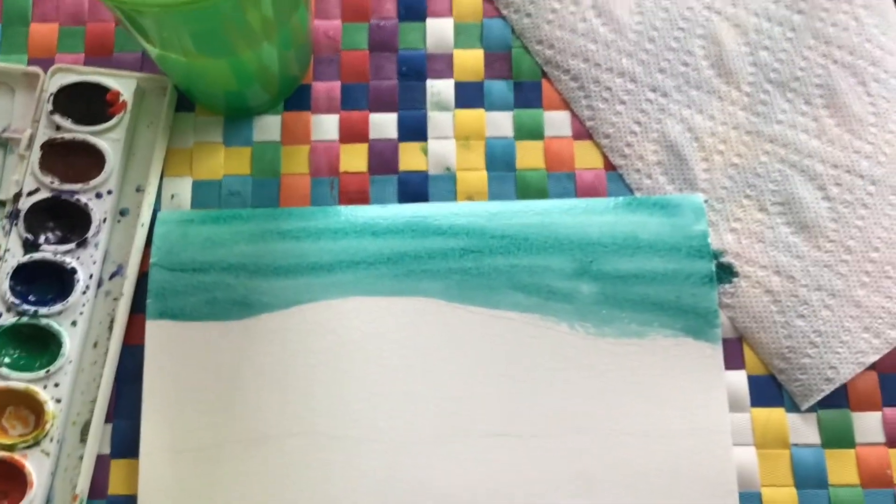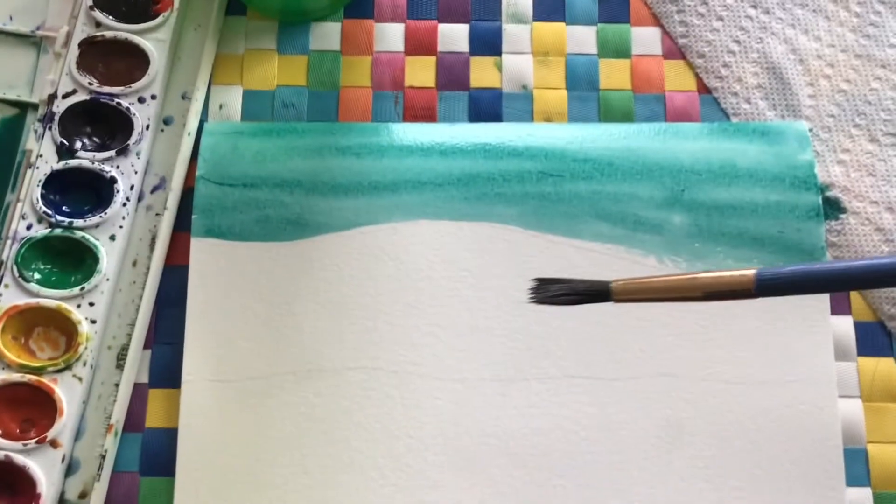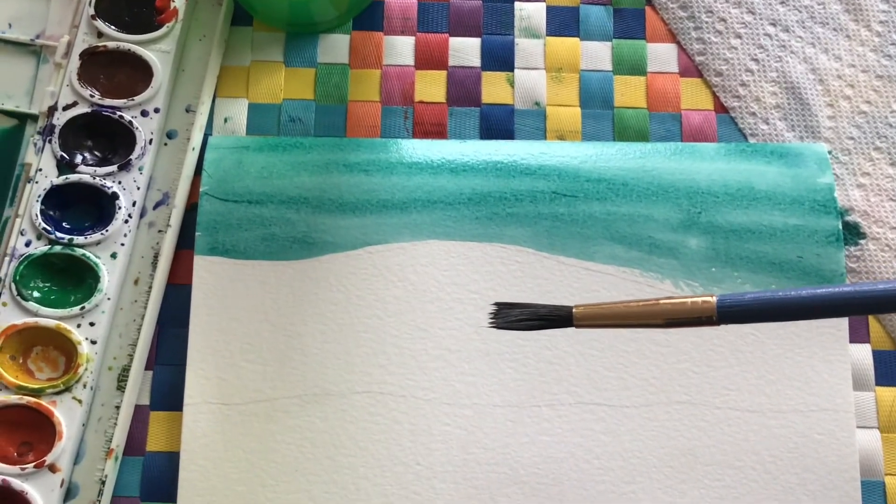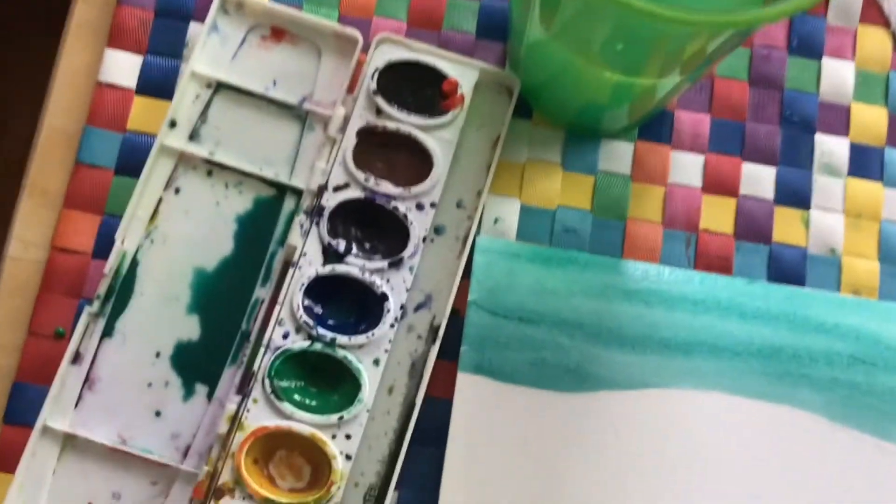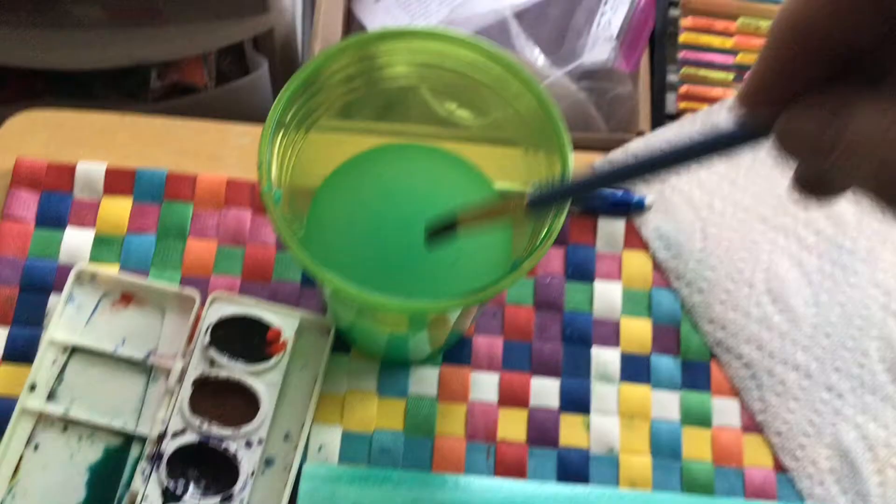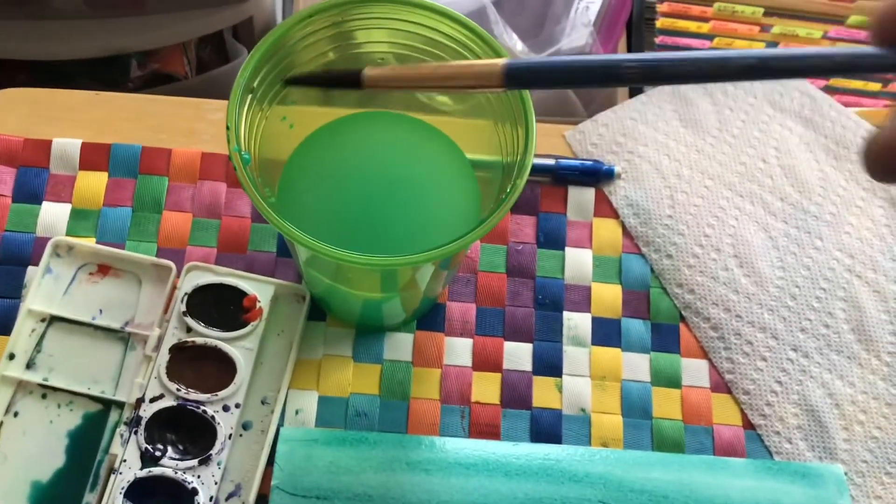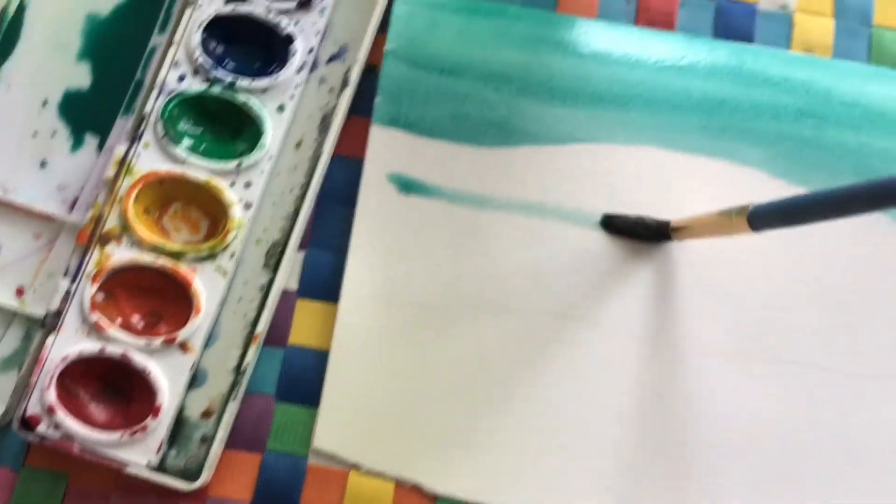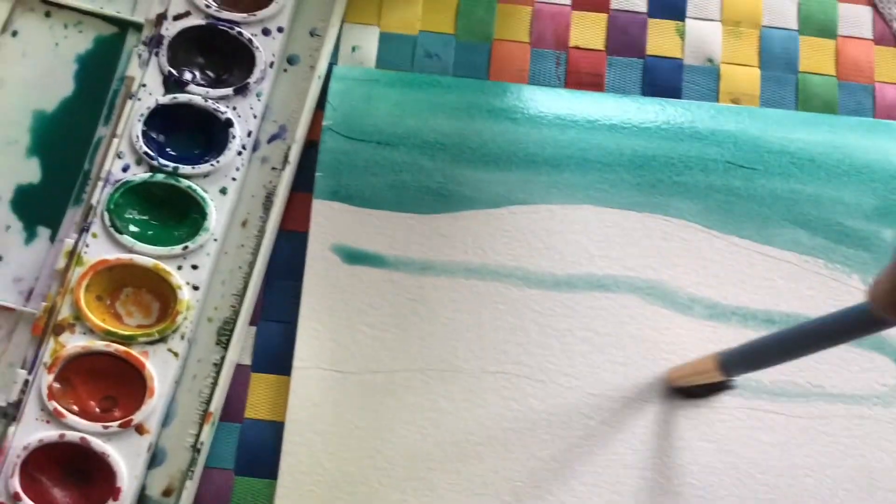But now I'm going to take this brush that I have here and I'm going to add some water to it. I'm just going to dip it in the water once. Kind of shake it off. So it still has the paint on it but now it's really watered down and I'm going to do this middle part with that watered down version.